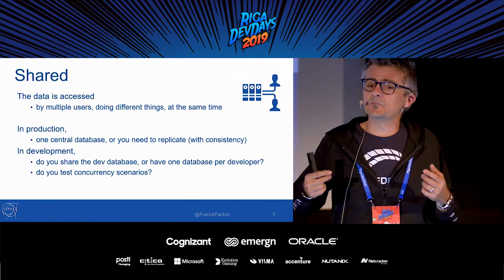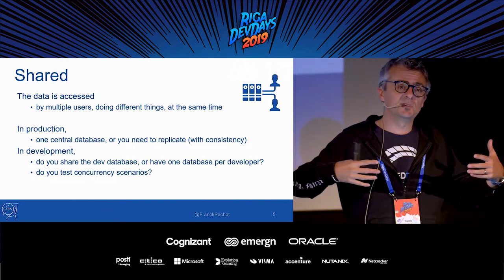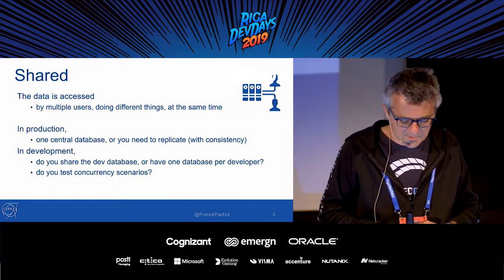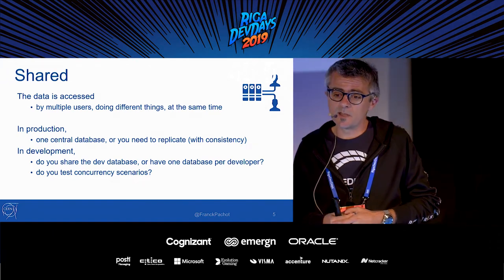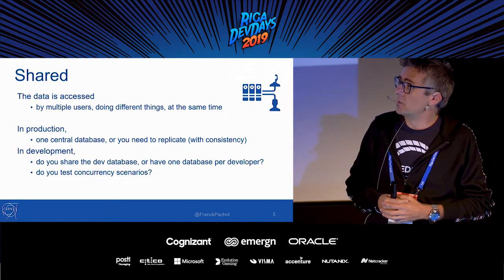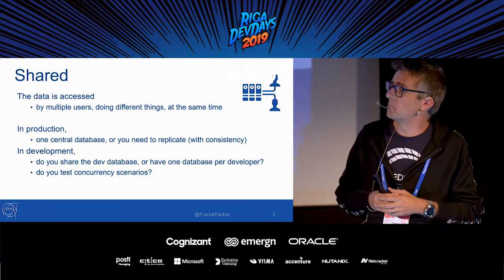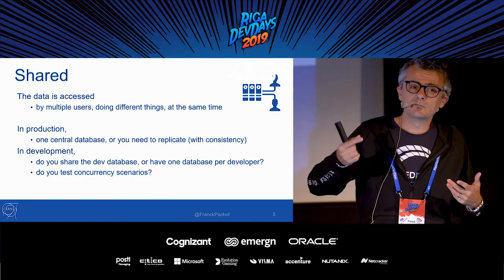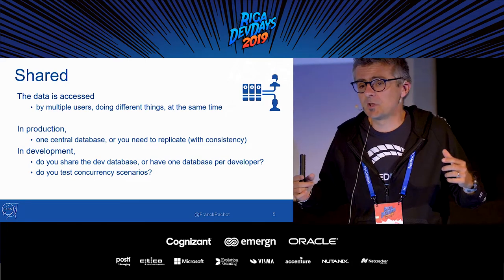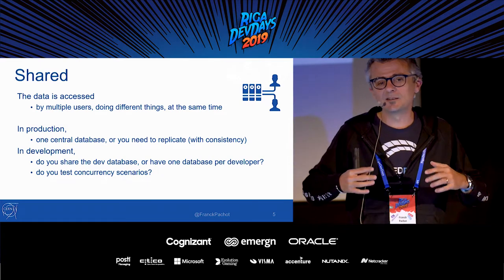First, it is shared, which means the database is accessed by many people — multiple users at the same time, concurrency — doing very different things. Some are inserting data in bulk, some are updating rows, some are running big queries. In production, it's easy to have one big database shared with everybody, or if you don't do that, you need to replicate and think about consistency. In development, the fact that the database is shared is a problem: do you give one database for each developer, one copy of production or anonymized data, or do developers share the same databases?